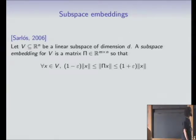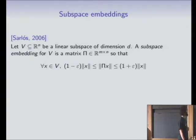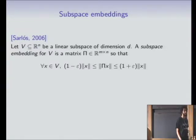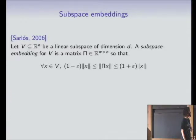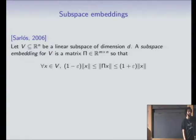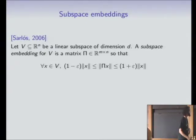There was an idea proposed by Sarlos about seven years ago to speed up all these algorithms using what's known as a subspace embedding. Let V be a linear subspace of dimension D. A subspace embedding is a matrix pi that preserves all norms approximately — for any vector in the subspace V, up to a factor of 1 plus epsilon. Pi is an M-by-N matrix, and the point is I want M to be as small as possible.